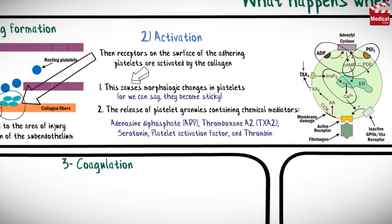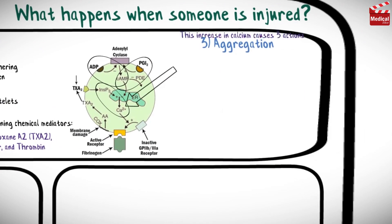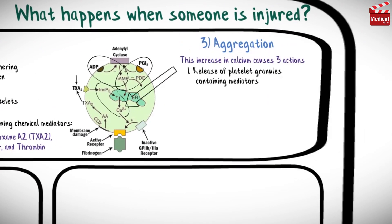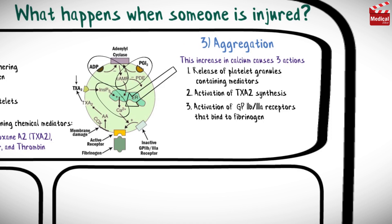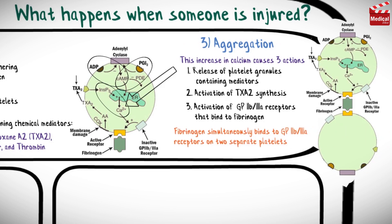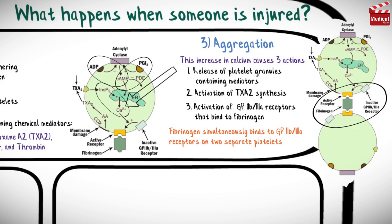This increase in calcium causes three actions: the release of platelet granules containing mediators such as ADP and serotonin that activate other platelets; activation of thromboxane A2 synthesis; and activation of glycoprotein 2b3a receptors that bind to fibrinogen. Fibrinogen, which is a soluble plasma glycoprotein, simultaneously binds to glycoprotein 2b3a receptors on two separate platelets, resulting in platelet cross-linking and platelet aggregation.